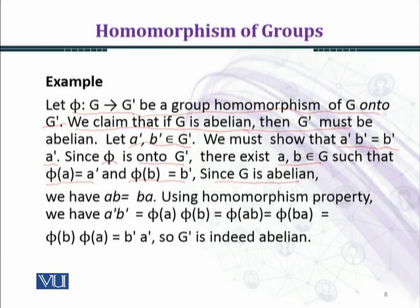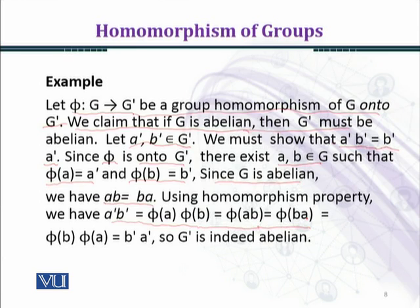Since G is abelian, we have a · b = b · a. Using the homomorphism property, a prime · b prime = phi(a) · phi(b) = phi(a · b) = phi(b · a) = phi(b) · phi(a) = b prime · a prime. So we have proved that G prime is an abelian group. The commutative property holds in general in G prime.